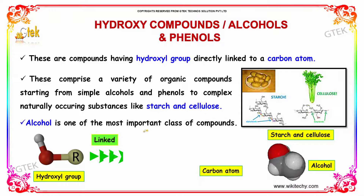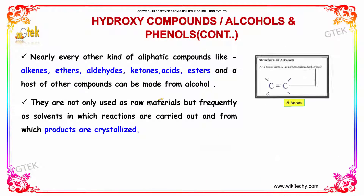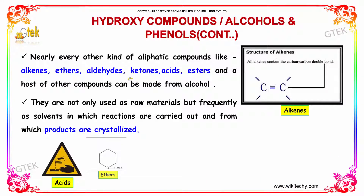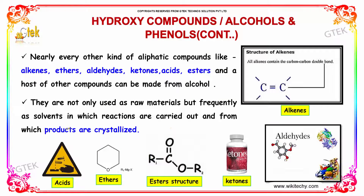Alcohol is one of the most important classes of compounds. Nearly every other kind of aliphatic compound — like alkenes, ethers, aldehydes, ketones, acids, esters, and a host of other compounds — can be made from alcohol. They are not only used as raw materials but frequently as solvents in which reactions are carried out and from which products are crystallized.